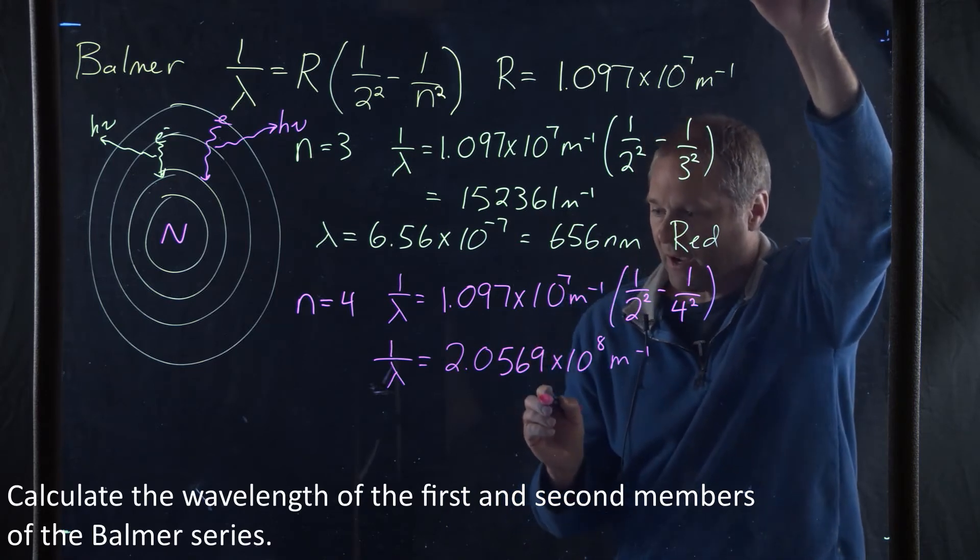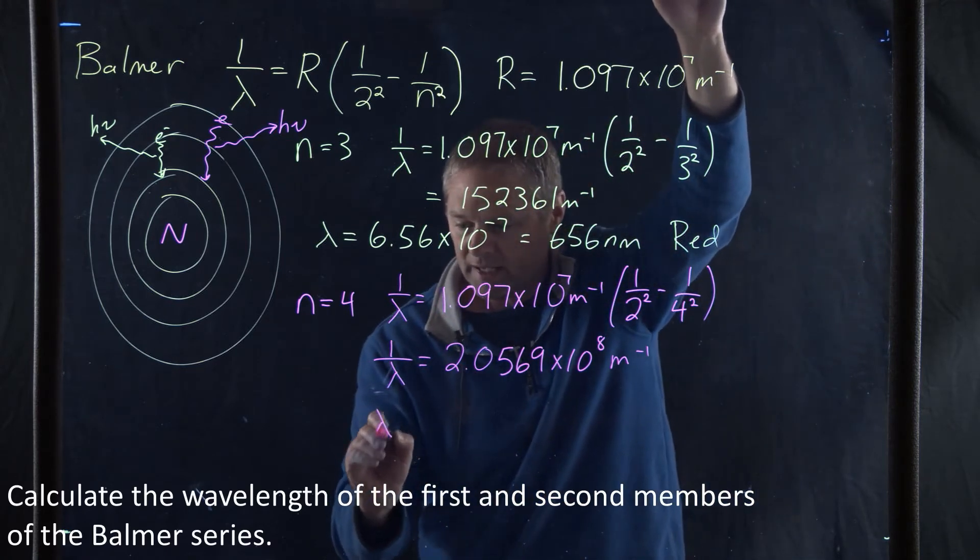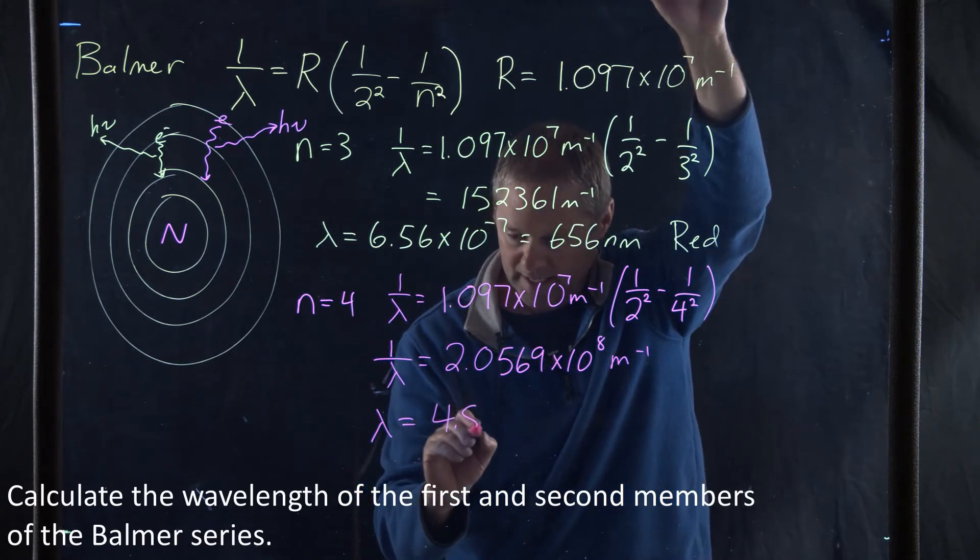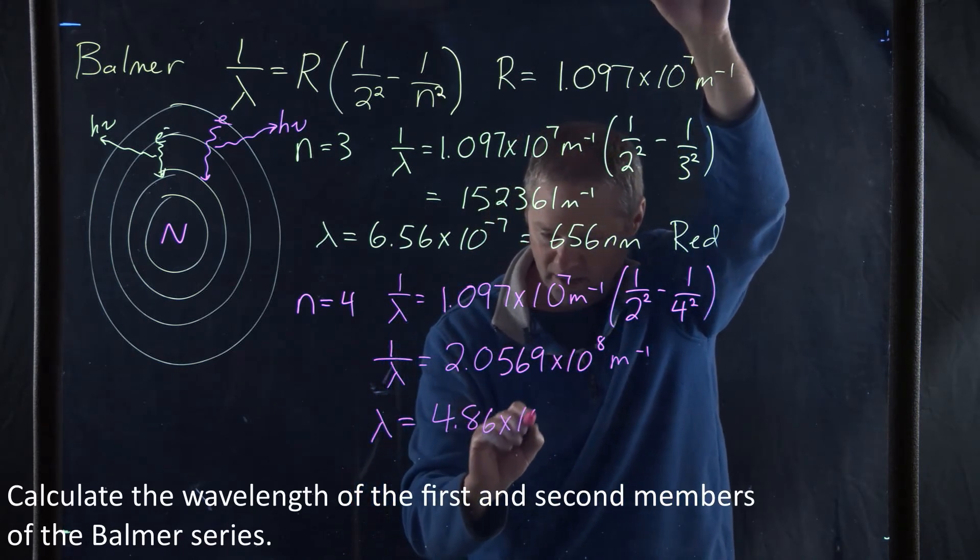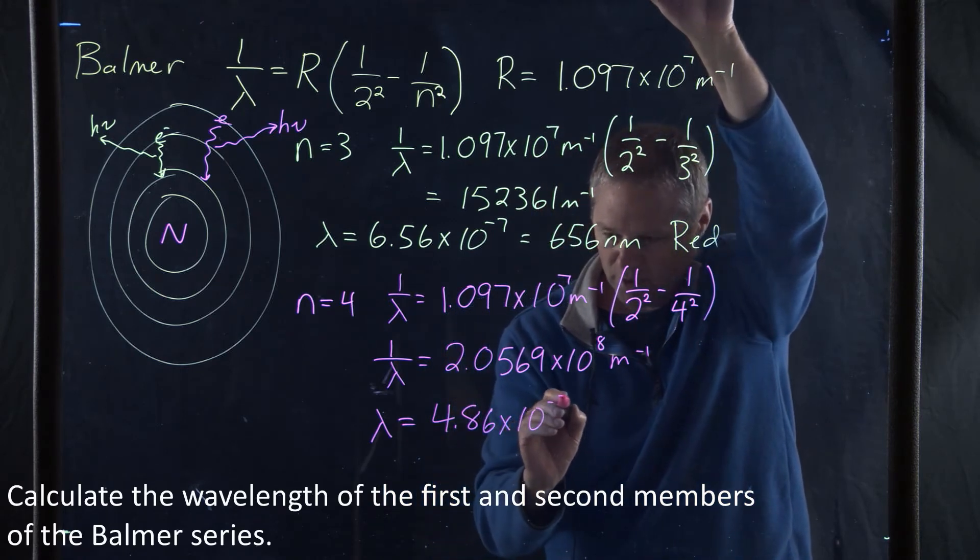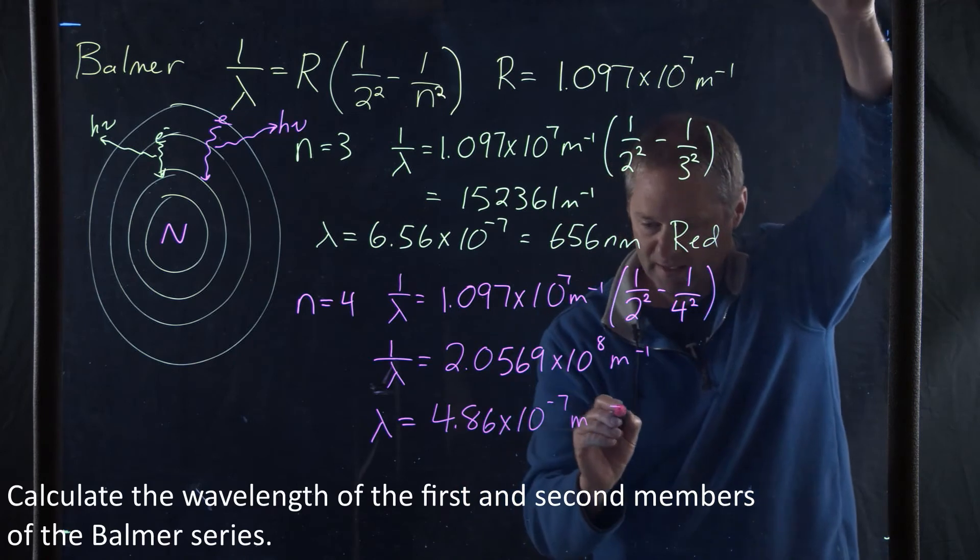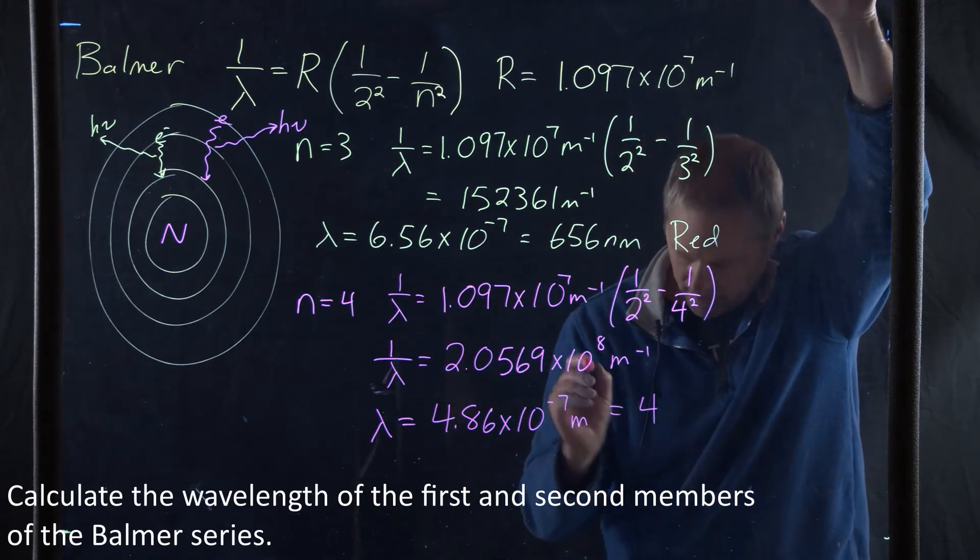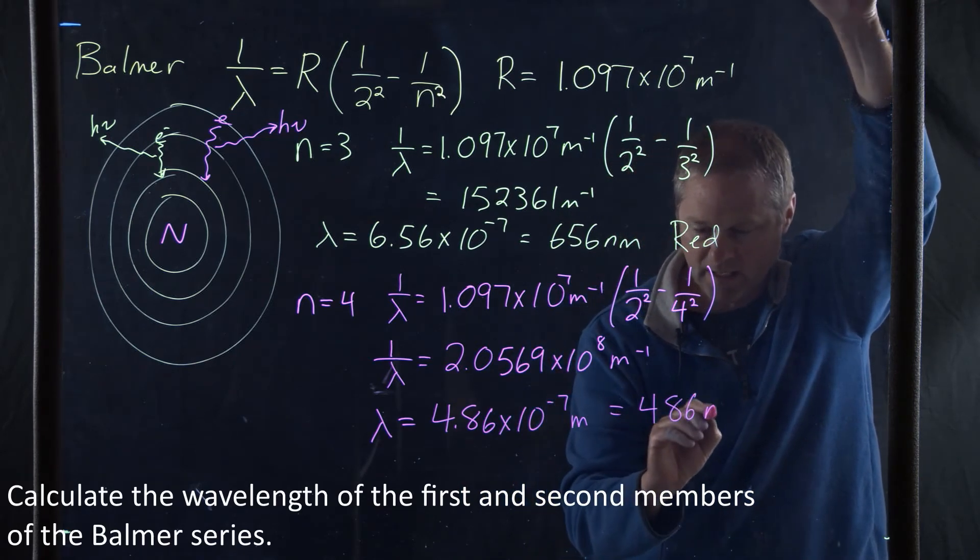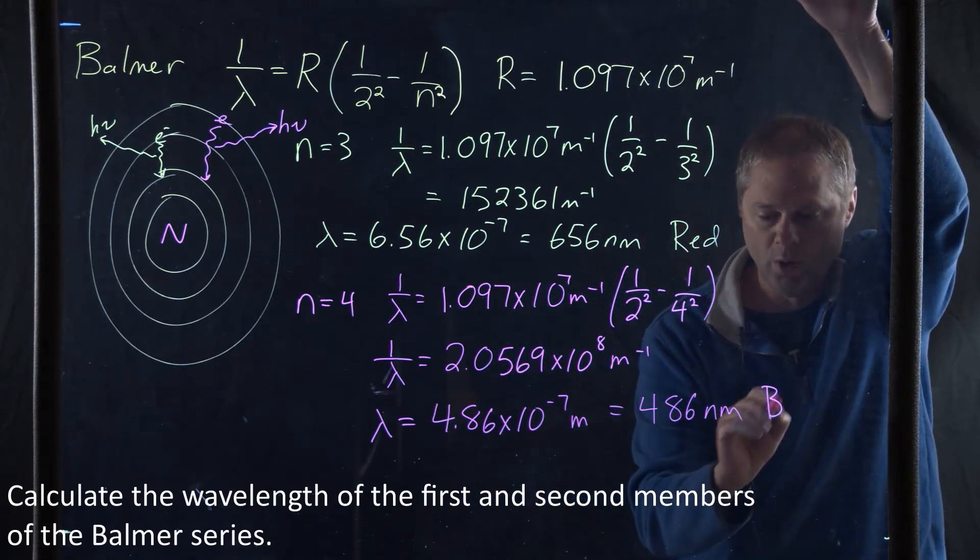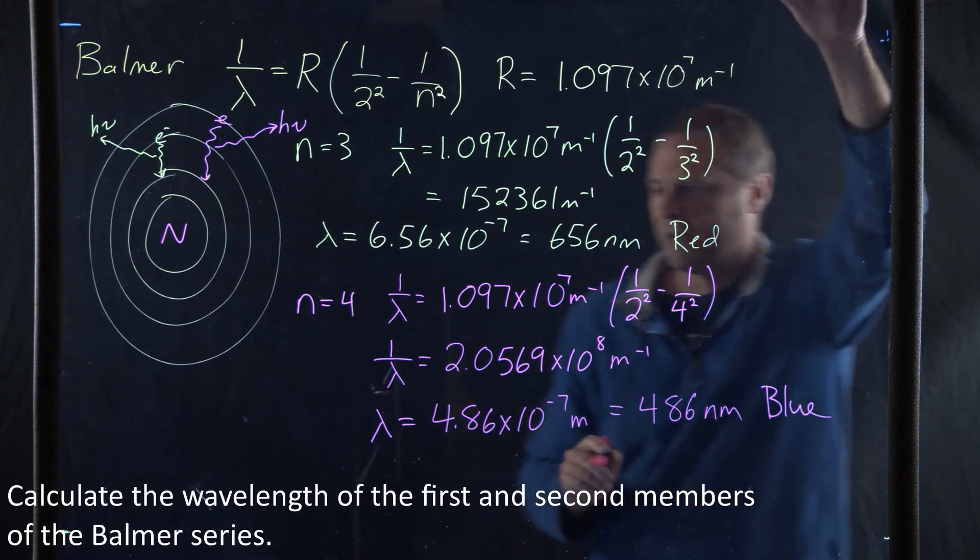We get 1 over lambda is equal to now, this is 2.0569 times 10 to the 8th meter minus 1. Now, we take the inverse of both, and what we get is 4.86 times 10 to the negative 7th meter. Or we can say this is equal to 486 nanometers, which is going to be in the blue portion of the spectrum.